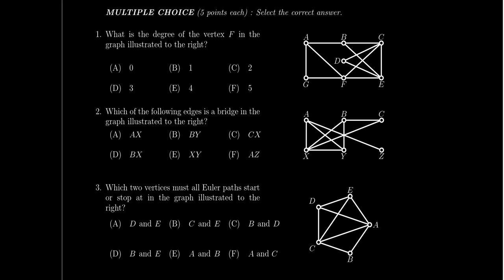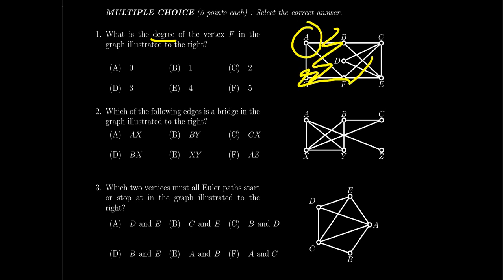Question number one — honestly, this is true for basically every question on this exam — you're going to be given a graph and asked to analyze some aspect of it. Question one is a softball to start. It asks about how vertices are connected to each other, so things like degree. The degree of a vertex is the number of edges connected to it; if a loop is present, we count the loop twice. It's like drawing a circle around the vertex and counting how many edges you see.